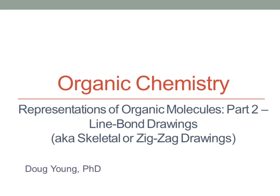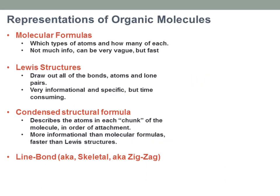Hopefully you watched the other representations in the first video but I'll review them quickly here. The molecular formula is just what atoms there are. So say we're going to take butane for example — C4H10. That would be the molecular formula for butane. There are different ways I could assemble those atoms, but it just tells you what types of elements are there and how many of each. Not that much information.